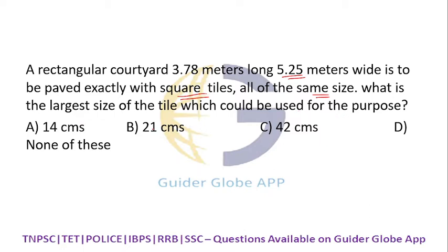The answers are in centimeters because the tiles will be in centimeters. So you convert this: 3.78 meters equals 378 centimeters, this is 525 centimeters. Largest size of square tile means you take HCF for 525 and 378.